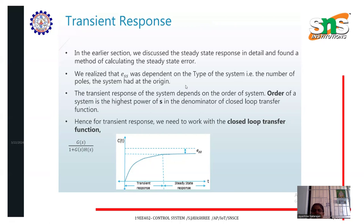The order of the system is the highest power of s in the denominator of the closed-loop transfer function. The type of the system depends on the number of poles at the origin of the open-loop system, whereas the order depends on the closed-loop system. For transient response, we need to work with the closed-loop transfer function, which is G(s) divided by (1 + G(s)·H(s)).